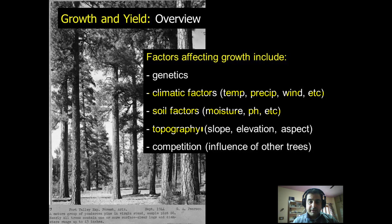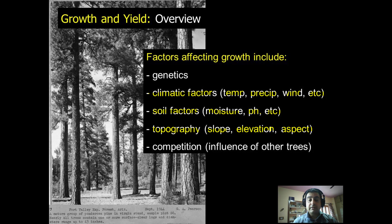Likewise, we have topography, which includes slope, elevation, and aspect. On higher slopes, growth is usually not as good as on lower slopes. Similarly, at higher elevations, growth is not as much as at lower elevations. In the northern hemisphere, southern aspects receive a good amount of insolation, so the rate of growth corresponding to temperature may be good, but for shade-loving species, the same principle may not apply.